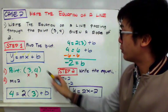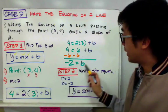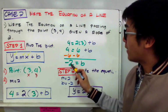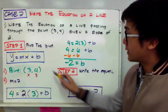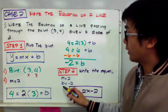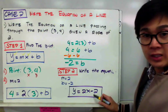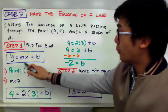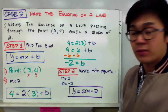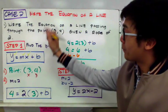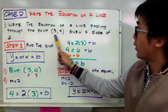Now in step one, we found the y-intercept: b = −2. Now that we have the slope and the y-intercept, we are ready to write the equation of a line. The equation is y = 2x − 2, which is the equation using the slope-intercept form. This is how we answer problems in case number two — given a point and a slope.